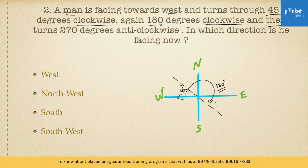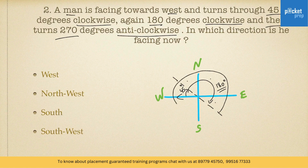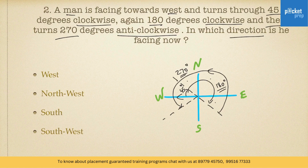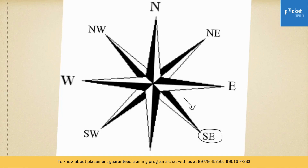Now after that he has turned 270 degrees anticlockwise. The anticlockwise direction is in this way and this angle is 270 degrees. In which direction is he facing now? After turning 270 degrees anticlockwise, he is facing this direction. From the direction map, the man is facing in this direction after turning 270 degrees anticlockwise — it is south-west.